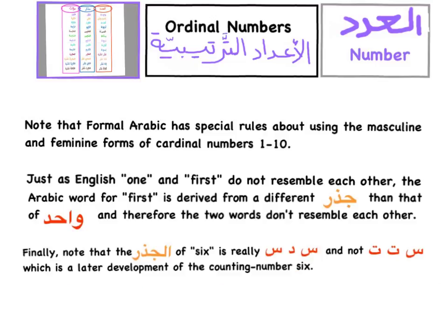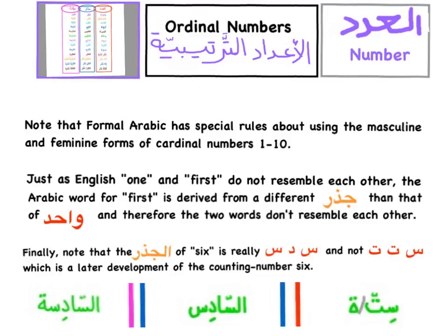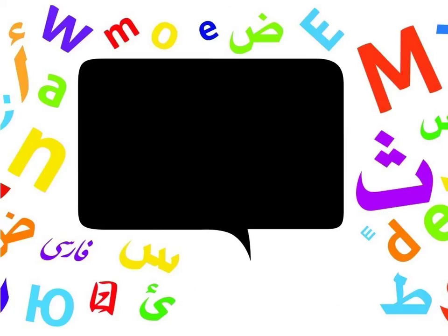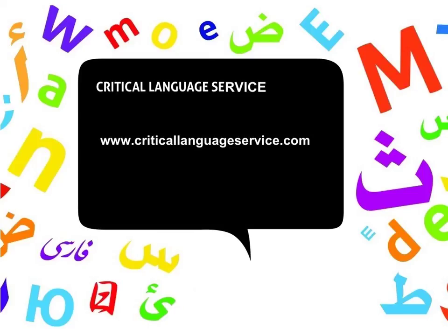Finally, note that the جذر of six is really س-د-س and not س-ت-ت, which is a later development of the counting number six. So ستة is six, السادس is the sixth, and السادسة is the sixth for feminine nouns.